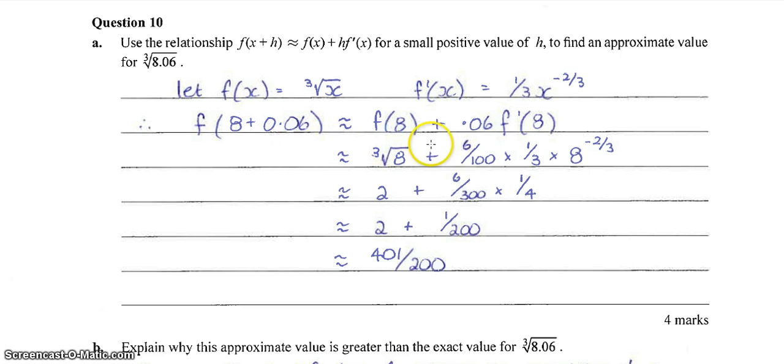So plugging all of that into the formula, we end up with f of 8 plus 0.06 times f dash of 8. If you differentiate the function, it's 1 on 3 x to the negative 2 on 3. So sub everything in, you get the cube root of 8 plus 6 on 100 times 1 on 3 times 8 to the negative 2 on 3.